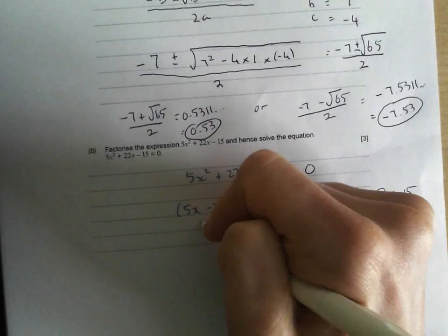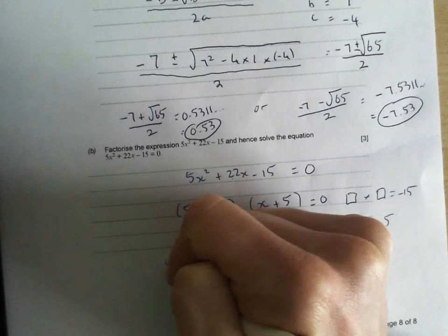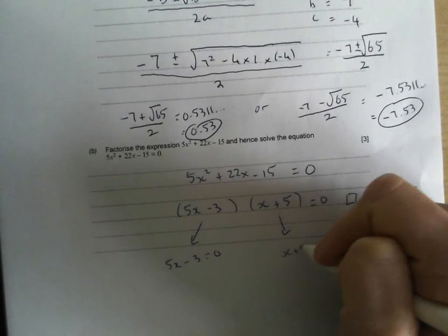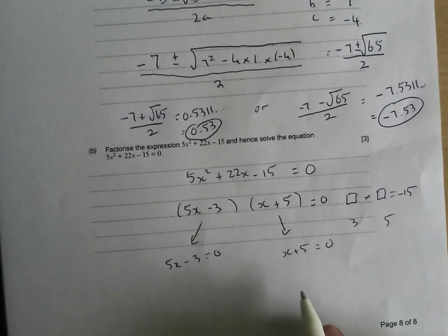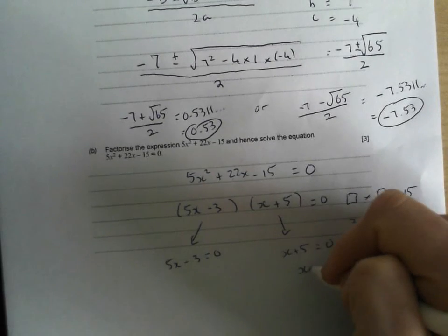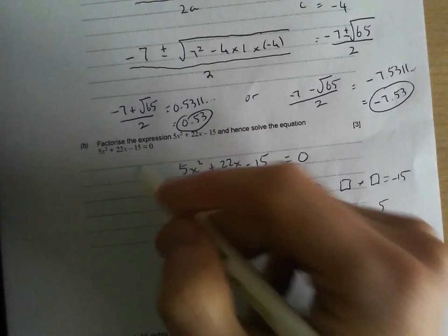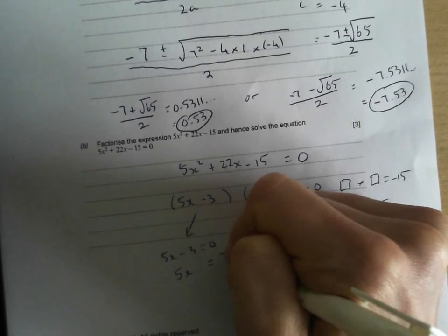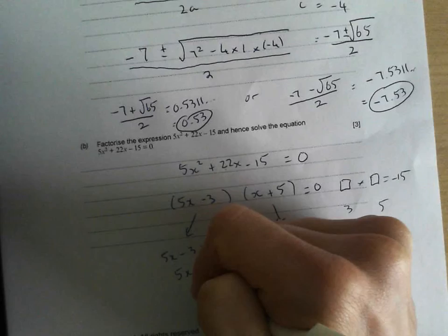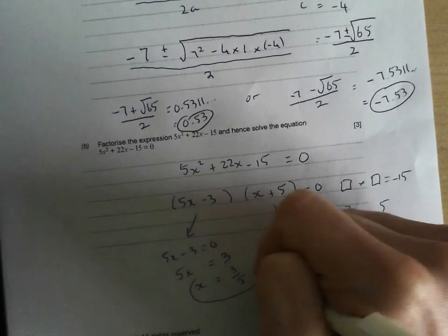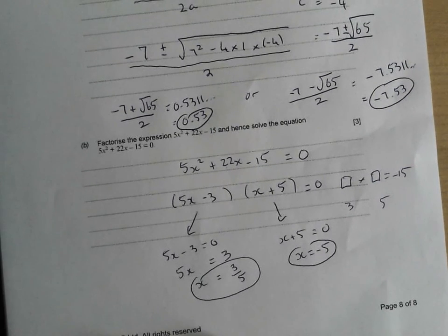Now I'm just going to solve the equation. So either 5x minus 3 equals 0, or x plus 5 equals 0. Well, this is the nice easy one. x plus 5 equals 0, so x equals minus 5. But this isn't too bad either. Just solve it as an equation. Add 3 to both sides, 5x equals 3. Divide both sides by 5, x equals 3 fifths, or 0.6 if you prefer. Done and dusted.